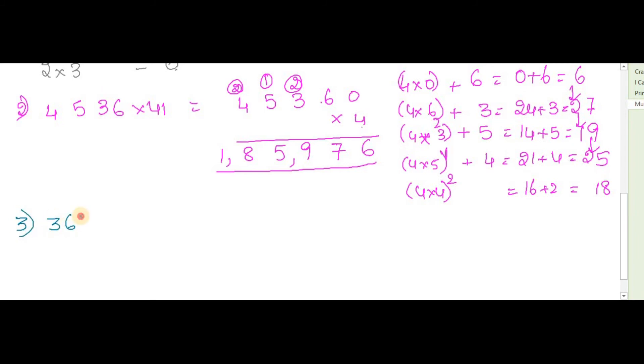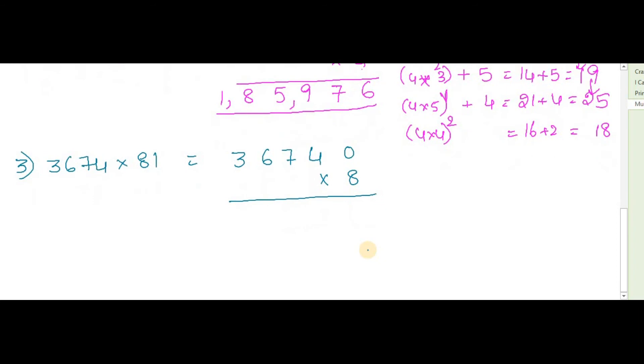3674 multiplied by 81. What is our first thing? We will just write down 3, 6, 4, 7, 0, multiply with 8. First, 8 into 0 plus 4, that is 0 plus 4 is 4.